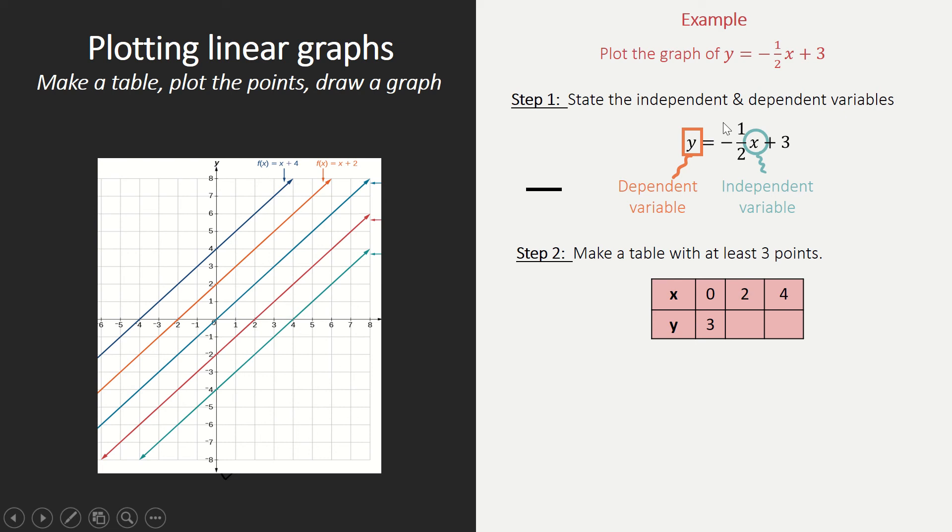If I'm going to fill in two, I get minus a half times two, which is minus one plus three, so I get two.